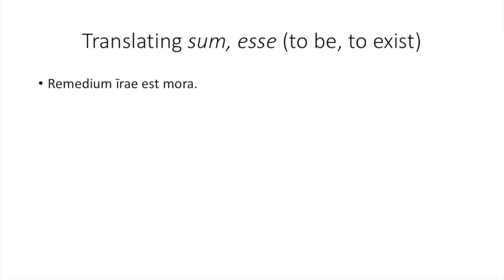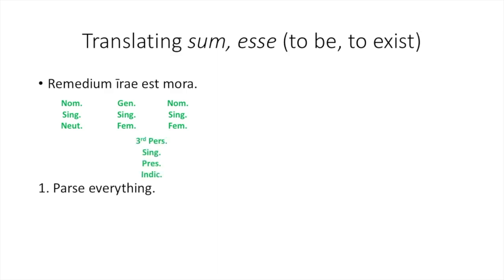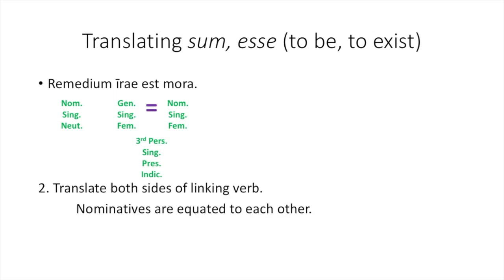So we've already seen how to translate it to some extent with our word est. Let's think about how this works. Let's take our example: remedium irae est mora. The first thing to do is parse everything. I've parsed our nouns; now you can parse the verb est. It's third person singular, present, and indicative. Remember, since it's a linking verb, we don't really talk about there being a voice. The next step is to translate both sides of a linking verb, because the nominatives on both sides are equated to each other. Your linking verb is sort of just like a giant equals sign. So you can say that the cure of anger equals delay, or in an English sentence: the cure of anger is delay.